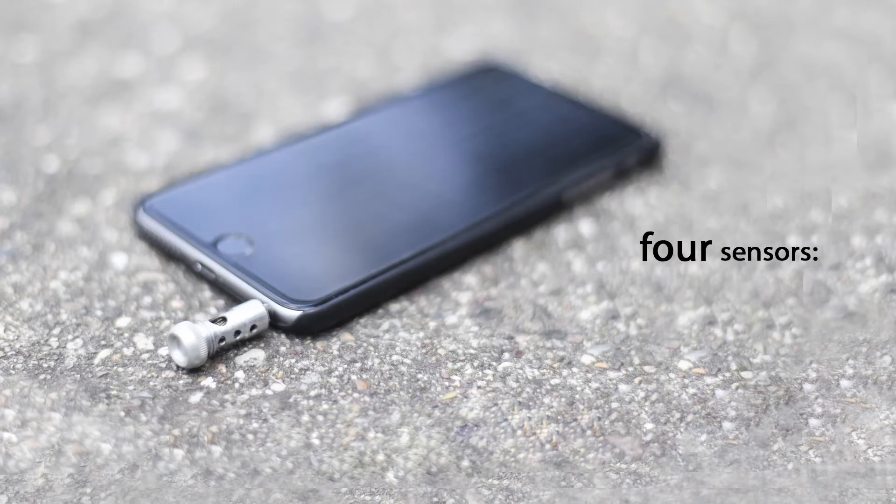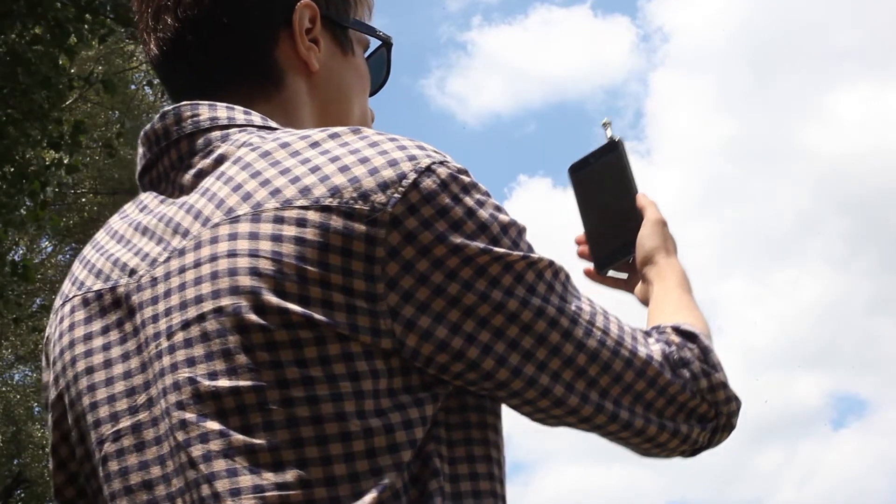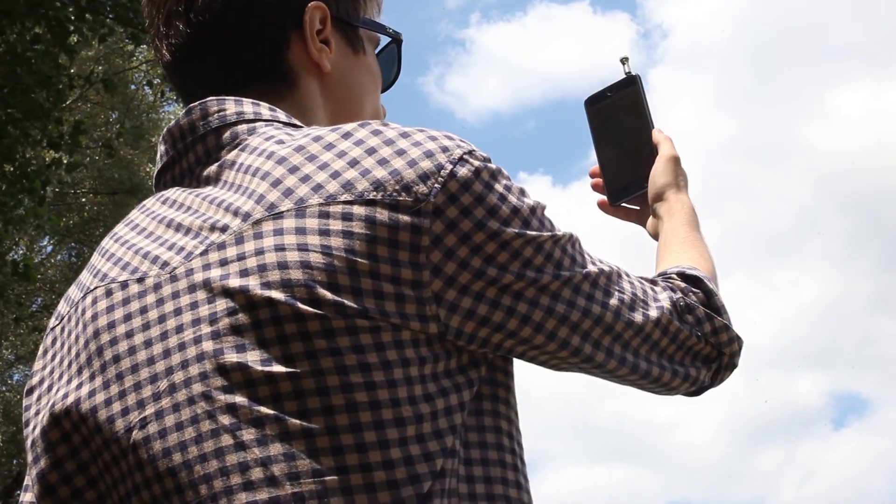It consists of four sensors for temperature, humidity, atmospheric pressure, and ultraviolet radiation. With this information, you can have the most accurate weather forecast anywhere you are.